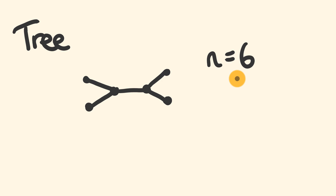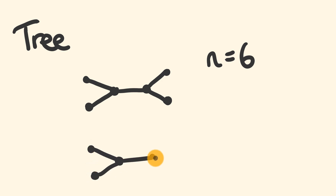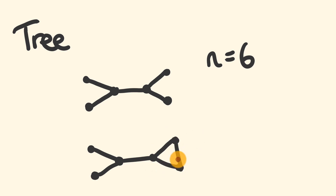One thing about a mathematical tree: circuits are not allowed. If you had a branching that hooks up in a loop — forming a circuit — that is not allowed. So that's the first rule: when drawing these trees, no closed loops or circuits are permitted.